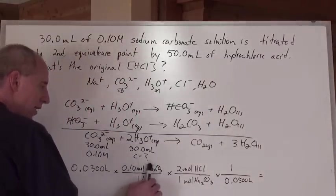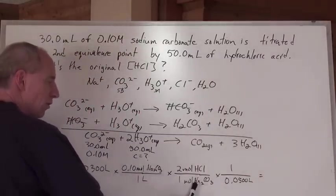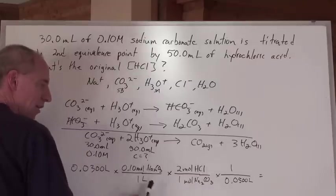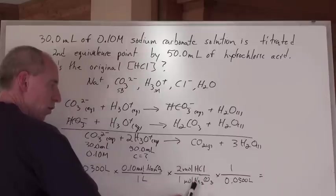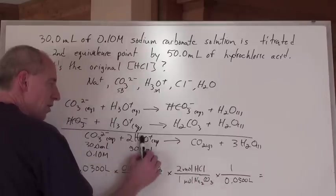And therefore, when we multiply this times this, we get the moles of the Na₂CO₃. But we don't want moles of Na₂CO₃, I think liters cancels, see. We want moles of HCl.